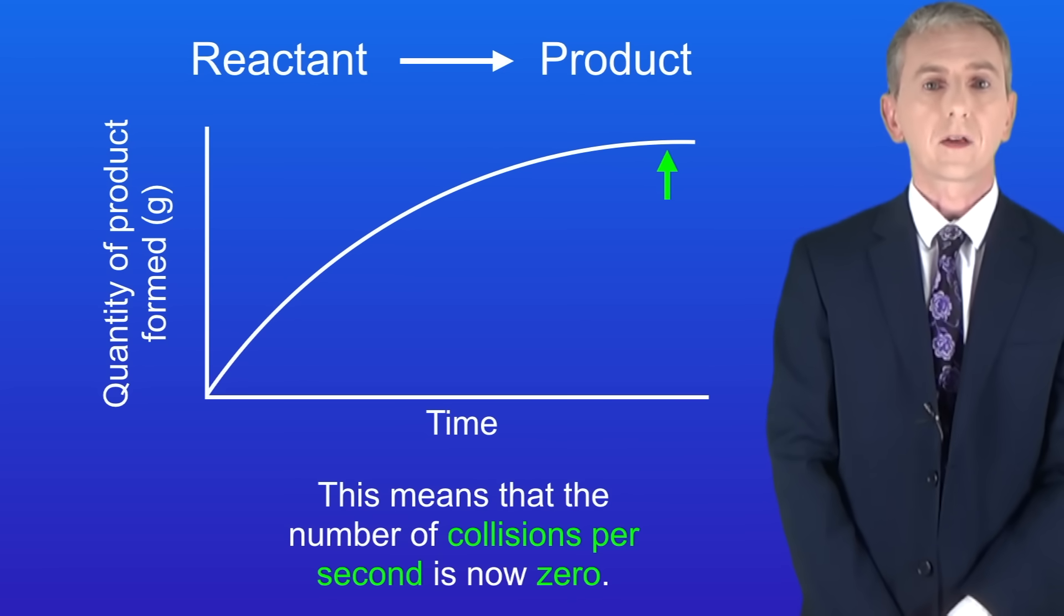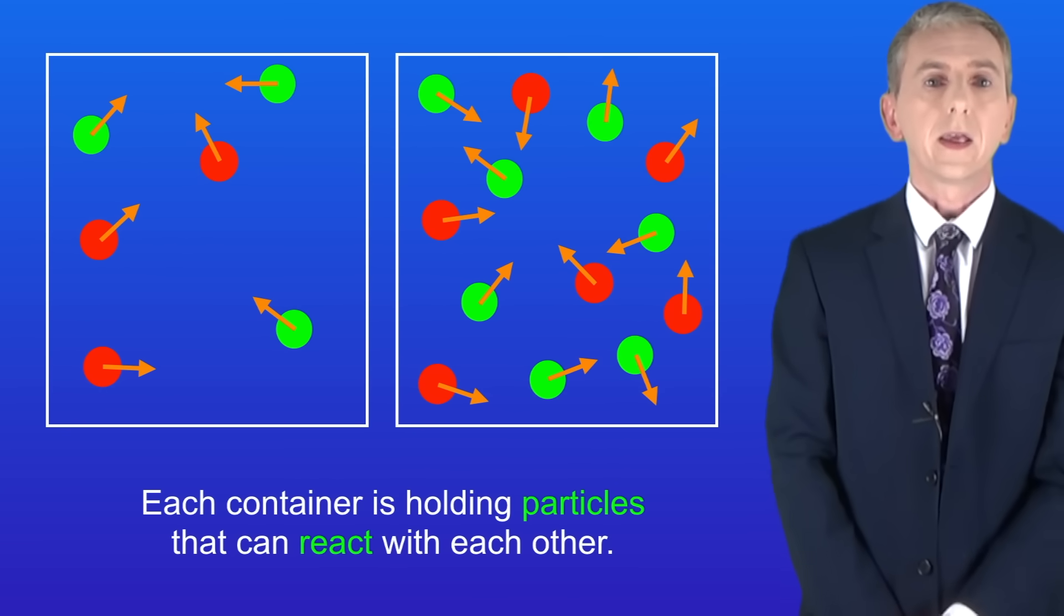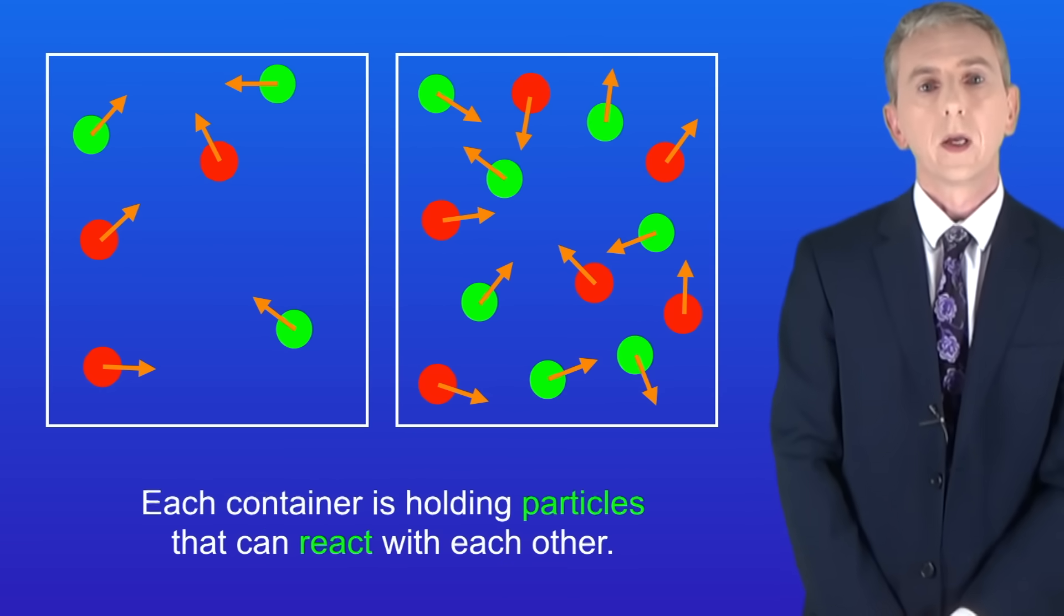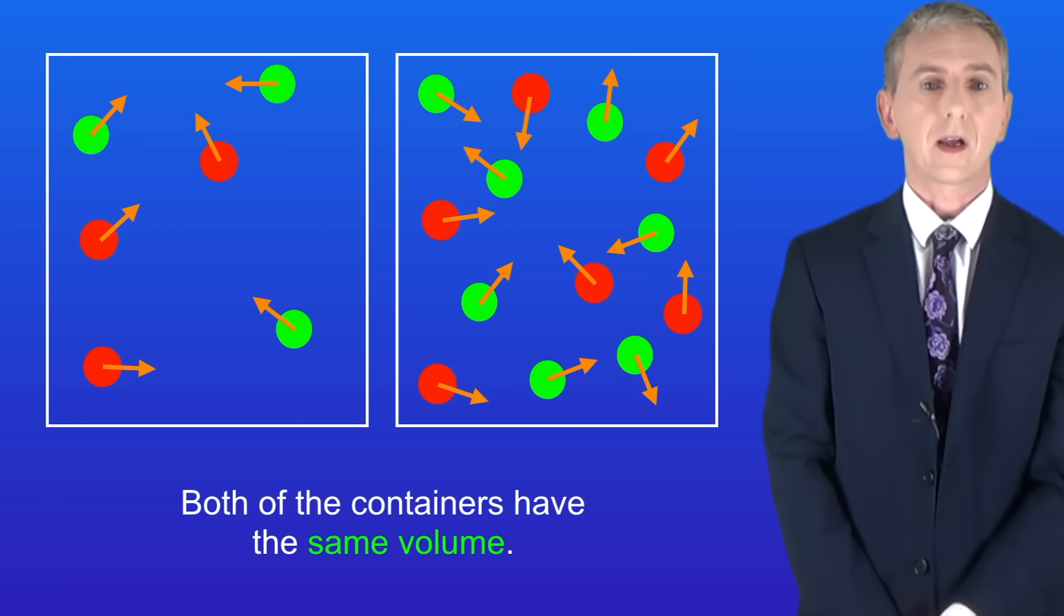In this video we're looking at the effect of concentration of reactants or the pressure of a gas on the rate of a reaction. I'm showing you here two containers. Each container is holding particles that can react with each other. We're going to assume that these particles are dissolved in water although I'm not showing you the water molecules, and you'll notice that both of the containers have the same volume.